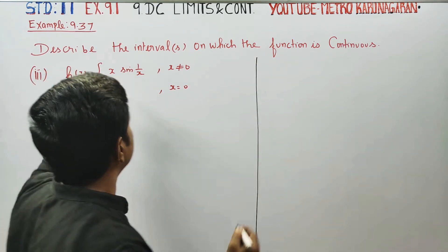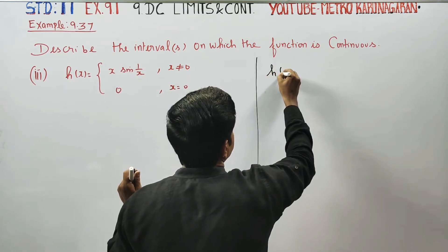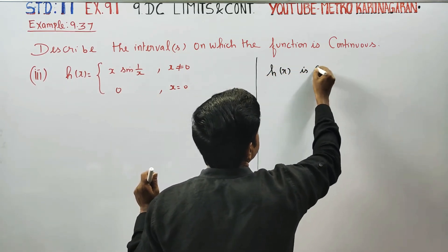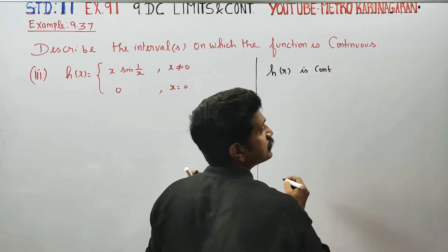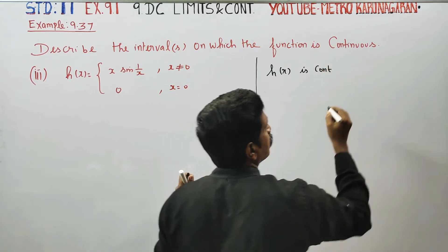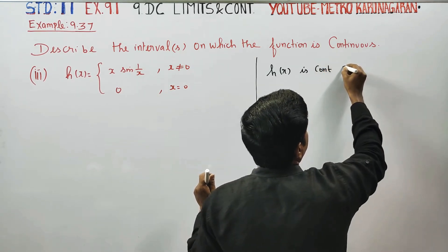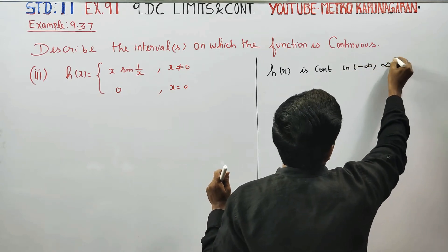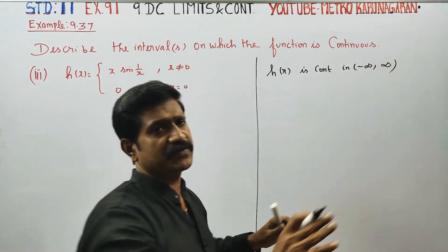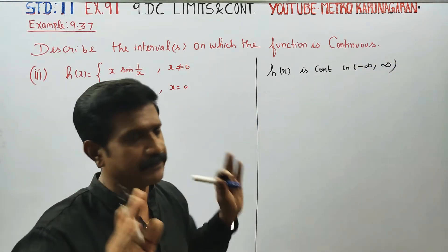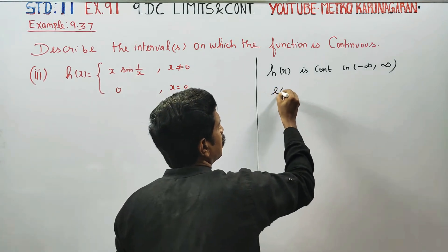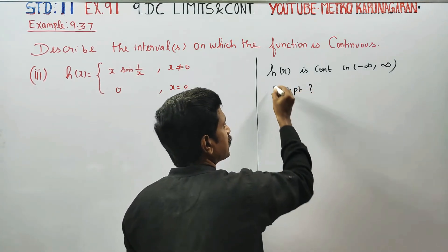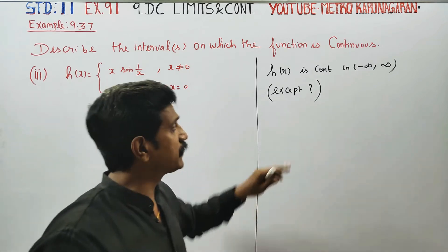So h(x) is continuous on the real numbers, from minus infinity to plus infinity, except at one point — you know, we need to check the zero of the function.